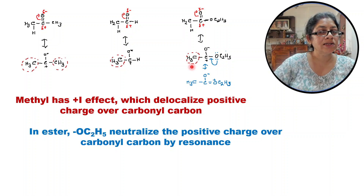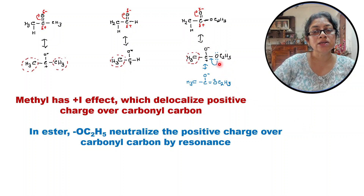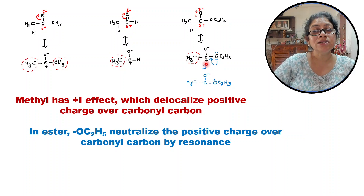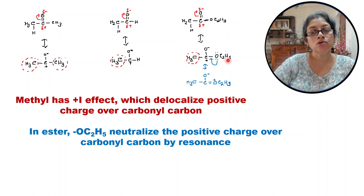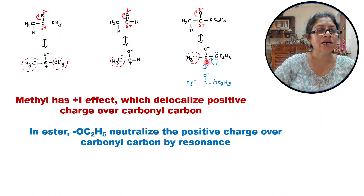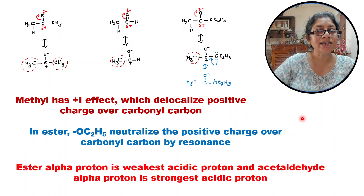In the ester there is also one methyl, so the positive charge delocalization from +I effect is also less. But at the same time we also have to consider that the ester has an OC₂H₅ group, and the oxygen has a lone pair which can donate to the positively charged carbon — meaning it can undergo resonance. Resonance is always dominating over inductive effect. So in the ester, the methyl contributes +I effect and the OC₂H₅ contributes a +R effect. That means the positive charge is more delocalized, so the alpha hydrogen is quite less acidic, and definitely the rate of keto-enol tautomerism is very low.